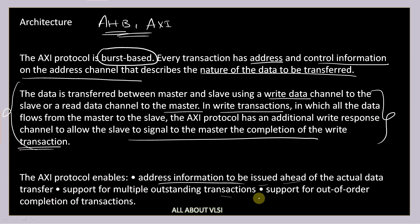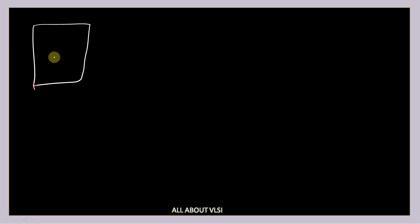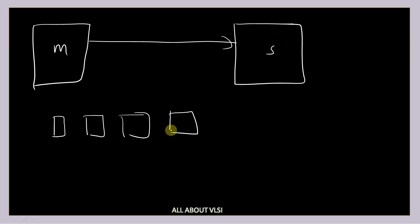AXI also supports multiple outstanding transactions and out-of-order completion. In AHB protocol, after transaction one completes, only then does the master initiate the next transaction — each taking two cycles: one for address/control and one for data.